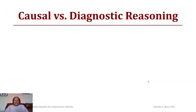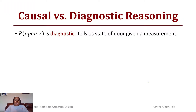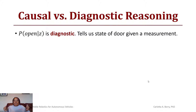We call this causal versus diagnostic reasoning. Diagnostic reasoning is when the robot has sensed something — what is the probability that the door is open? So it tells us the state of the door given some measurement. It's like a diagnosis if you think about it in medical terms.